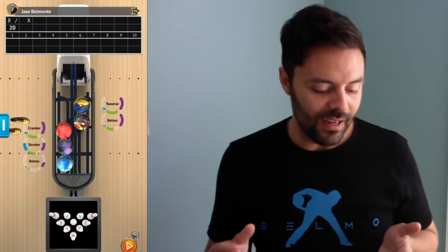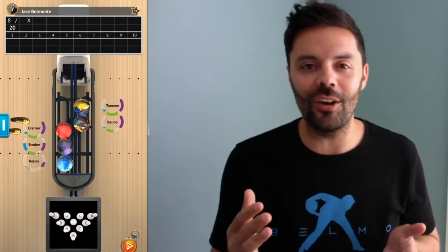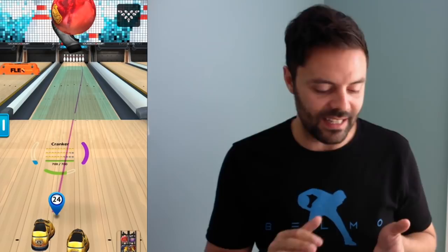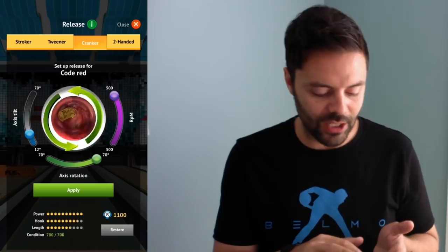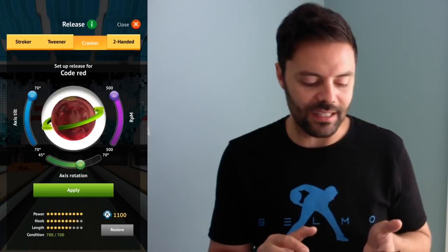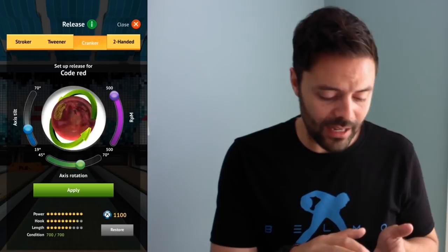The next style that you see is the cranker style, another one-handed delivery. And we have a look at its capabilities. Our RPM levels now have gone all the way up to 500 RPM. We can increase our axis rotation all the way to 70 degrees if we want and we can also change our axis tilt all the way to 70 degrees if we chose. So it has a lot more capabilities and usually with more rev rate you also get a little bit more power.